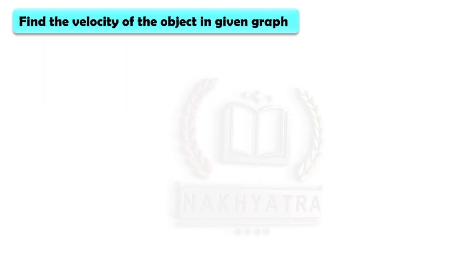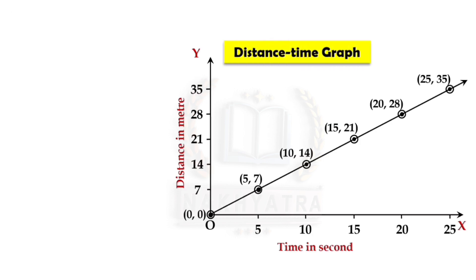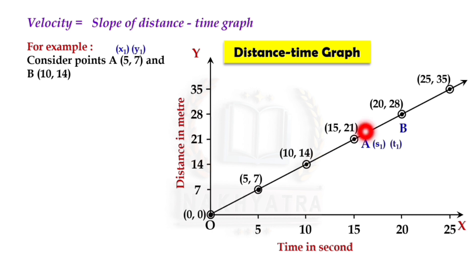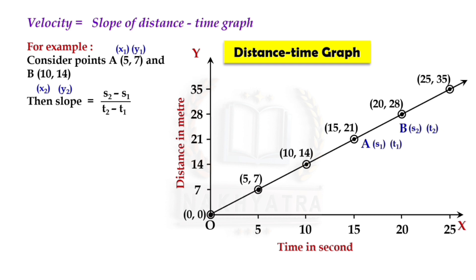Now find the velocity of the object in another given distance-time graph. Velocity equals the slope of the distance-time graph. Consider points A and B where x₁ = 15, y₁ = 21, x₂ = 20, and y₂ = 28. Then slope = (s₂ − s₁) / (t₂ − t₁). Putting in the values and calculating, we get 1.4 meters per second. So the velocity is 1.4 m/s.